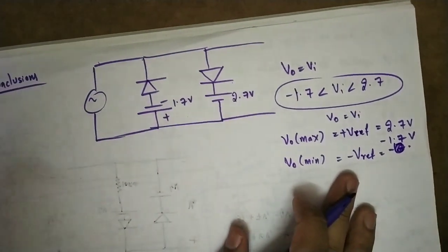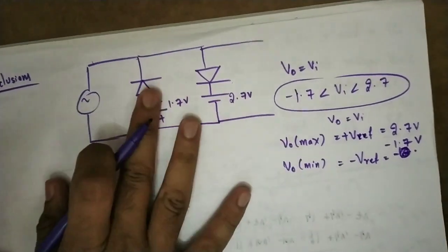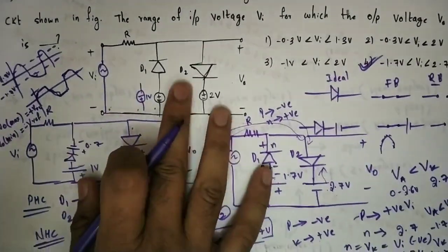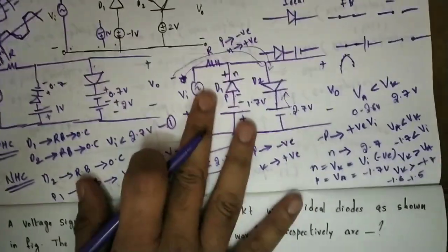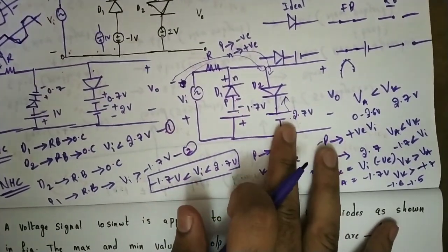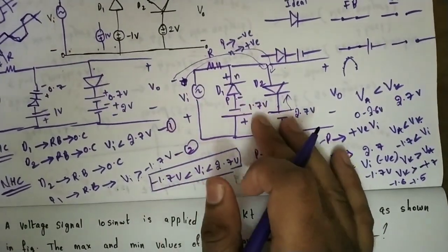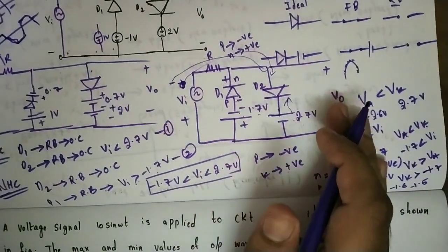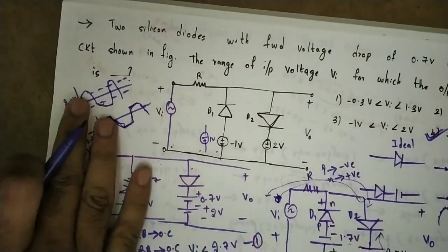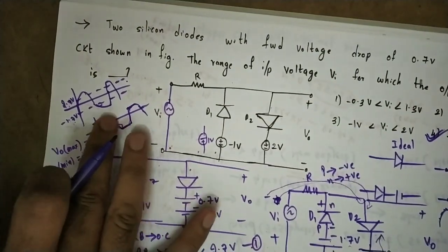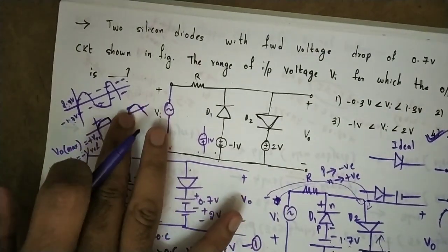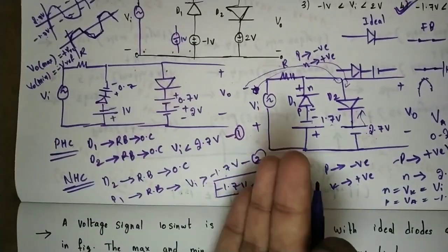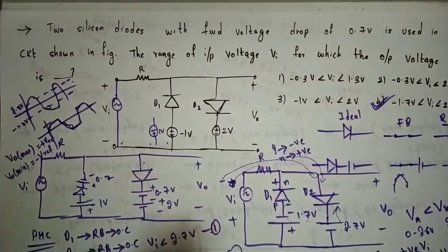This is an easy conclusion. When you start with ideal diodes in a parallel clipper, V0 equals VI within the reference voltage range. The reference values clip off the output beyond those limits. That's the overall explanation of this question.